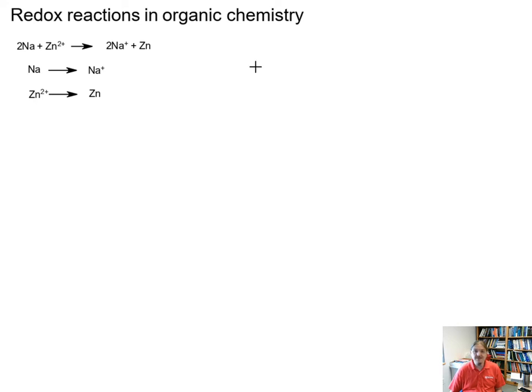And there is a possibility that when you were in general chemistry that you learned the oil rig mnemonic device. Oxidation is loss, reduction is gain, and we're talking about electrons in both cases. And so you can identify which half reaction corresponds to oxidation and which half reaction corresponds to reduction by figuring out what happens to the electrons.